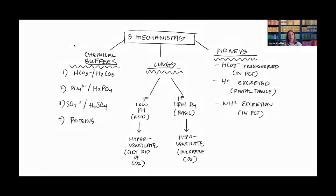The lungs breathe out carbon dioxide and this happens in minutes. If you hyperventilate for 15 minutes, you can increase your pH by about 0.02. Breathing more rapidly blows off CO2, raising the pH and making it more alkalotic. Conversely, hypoventilating retains CO2, which accumulates and lowers the pH, making it more acidic.